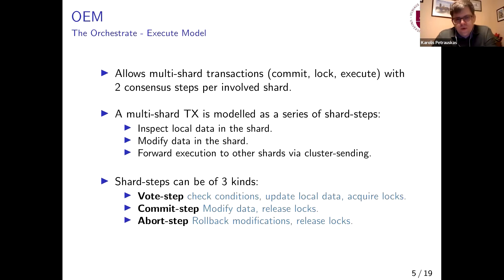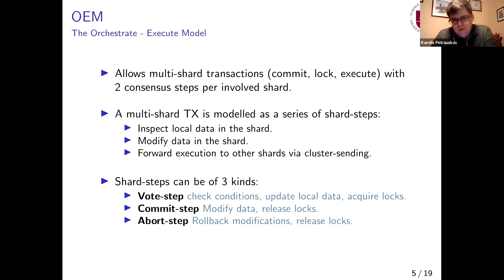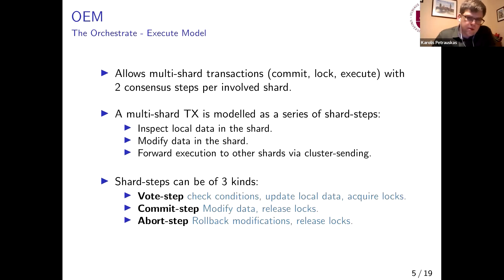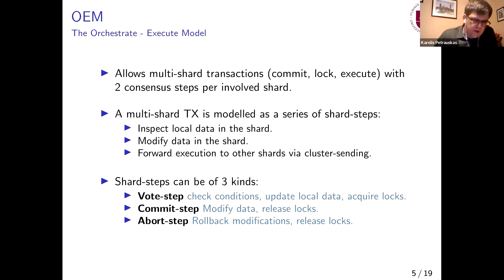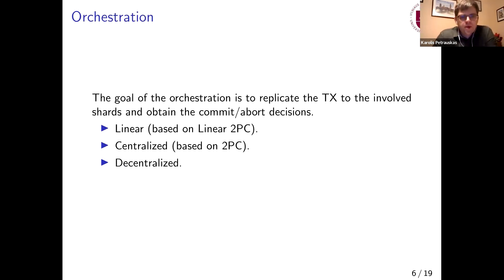To have more structure in that execution, the shard steps are grouped in several categories. Those can be either vote steps, commit steps, or abort steps. In the vote step, a shard can check conditions of the transaction, update local data, and acquire locks. In the commit step, it can modify data and release locks only. The abort step can modify data to roll back some values and also release locks. Even from these names, it is visible that the entire algorithm is built around two-phase commit, which will be apparent next.